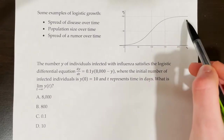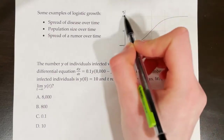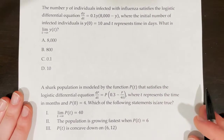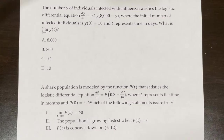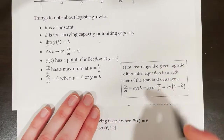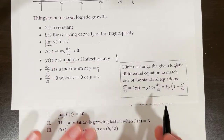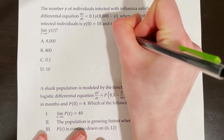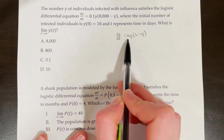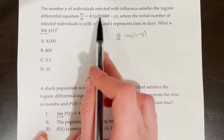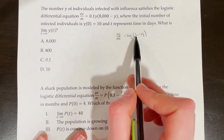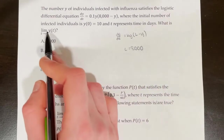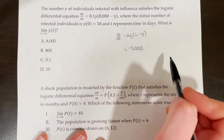Our equation is already in the format dy/dt equals ky times (L minus y). So k must be 0.1, and since the equation has (8000 minus y), L must be equal to 8000. L is our carrying capacity, so the limit as t approaches infinity of y(t) equals 8000.